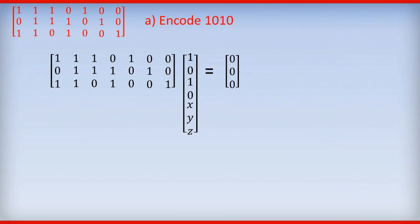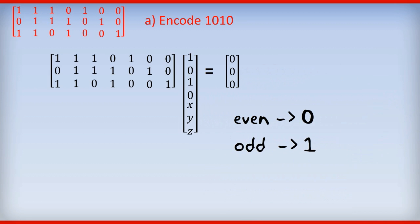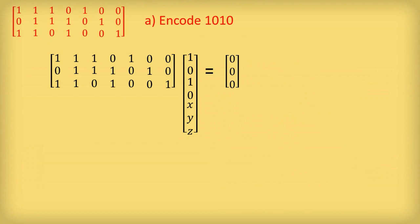Then we're going to find X, Y, Z by solving this matrix equation. And we're then going to simplify X, Y and Z by saying that if X, Y, Z are even, then we're going to represent them with a 0. And if they're odd, we're going to represent them with a 1. So some of you will recognize this as mod 2 arithmetic.